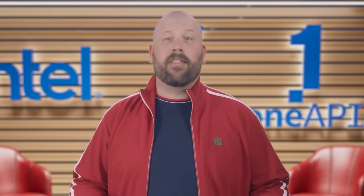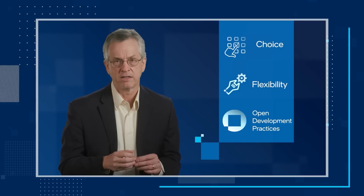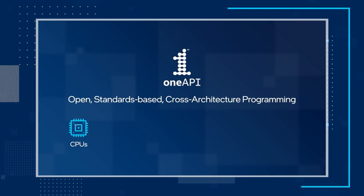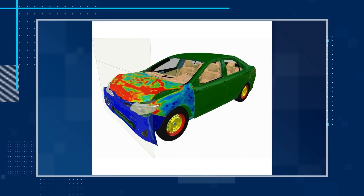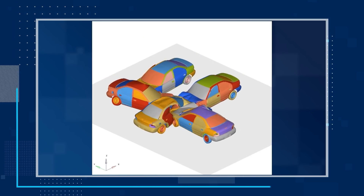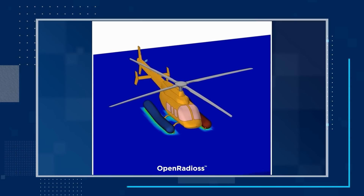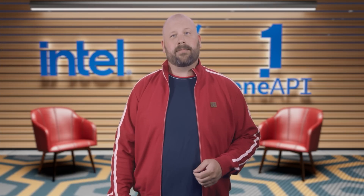From there, we move to another video featuring Joe Curley, Vice President and General Manager of the Intel Software Products and Ecosystem Group. Joe talks about how Intel's commitment to open software development to accelerate HPC is reflected in OneAPI open standards-based cross-architecture programming. He also touches on how Altair and Intel have collaborated for years, about their moving radios to open source, giving developers access to new technology, allowing them to innovate in structural analysis like crash simulations. Watch the video and learn more about these collaborations and the Intel OneAPI base and HPC toolkits.